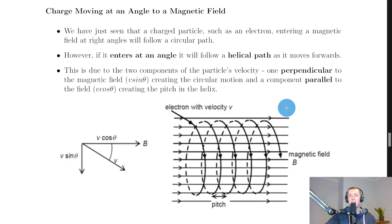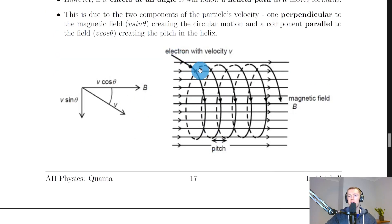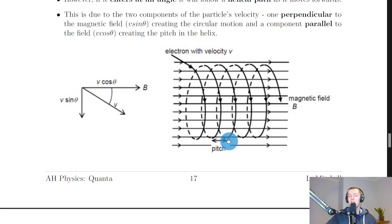If a charged particle enters a magnetic field at an angle rather than at right angles, it will follow a helical path. This is due to two components of velocity: one perpendicular to the magnetic field — V sine theta — creating circular motion, and one parallel to the field — V cosine theta — creating the pitch in the helix. The pitch is the distance between adjacent loops, similar to the distance between two crests on a wave.